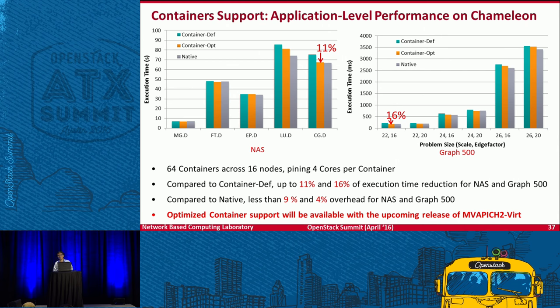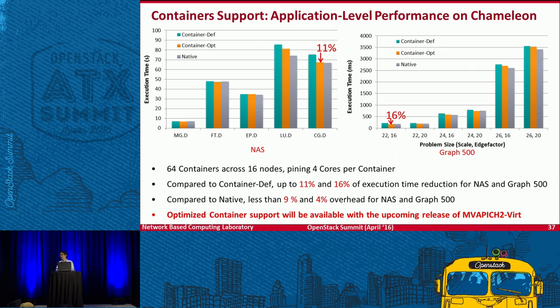For application-level evaluation, running LAMMPS and Graph500 across 64 containers on 16 Chameleon nodes, compared to the default way we achieve up to 11% or 16% execution time reduction. Compared to native, we only see less than 9% or 4% overhead. This optimized container support will be available with the upcoming release of our MVAPICH2 library.